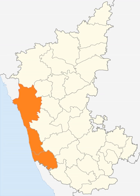The three districts in the region — Uttara Kannada, Udupi, and Dakshina Kannada — have their headquarters in Karwar, Udupi, and Mangalore respectively. The region is bounded on the east by the Western Ghats and on the west by the Arabian Sea. The coastal strip between the Western Ghats and the sea, including Kanara and the state of Goa and coastal Maharashtra to the north, is known as the Konkan coast, while the coast of Kerala is known as the Malabar coast.